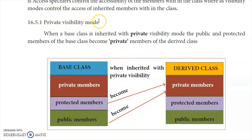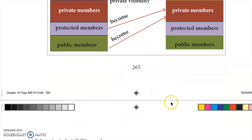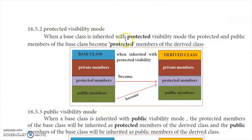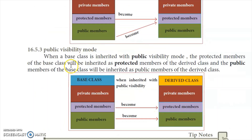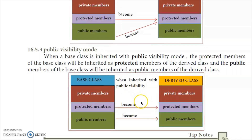First is private visibility mode. In this mode, the protected and public members of the base class become private in the derived class. Second is protected visibility mode. In this mode, private members remain private, and public and protected members become protected. In public visibility mode, private stays private, protected stays protected, and public stays public.